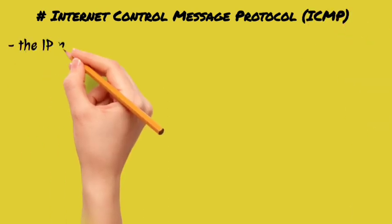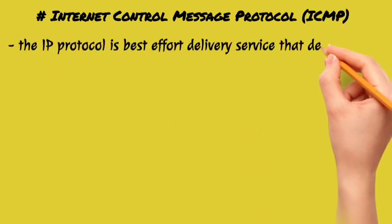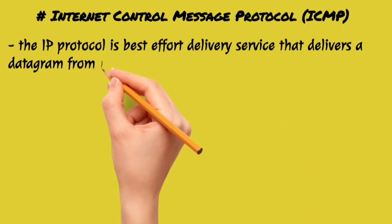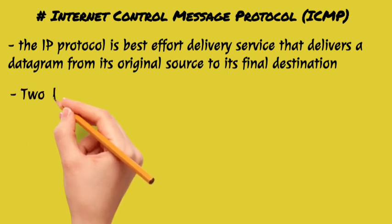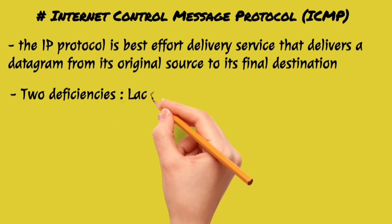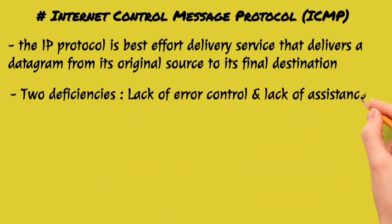First, let's talk about IP, that is the Internet Protocol. This is a best-effort delivery service which delivers data from its original source, but this is an unreliable and connectionless protocol. In IP, there are two types of deficiencies: lack of error control mechanism and assistance mechanism.